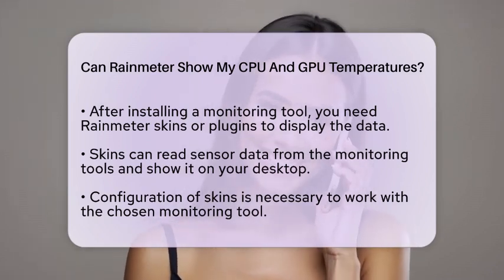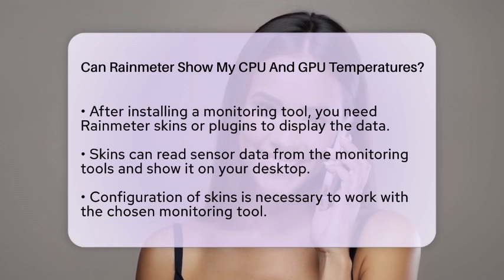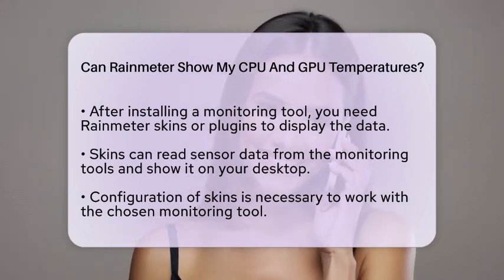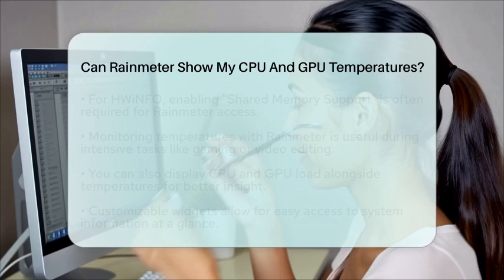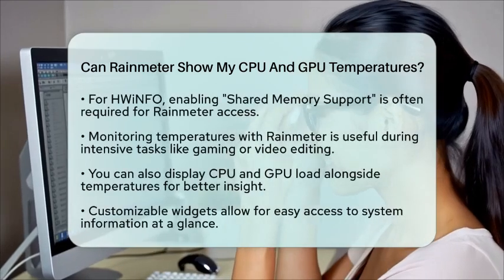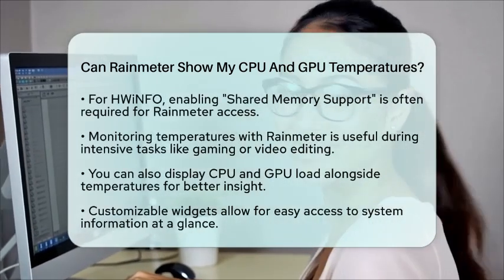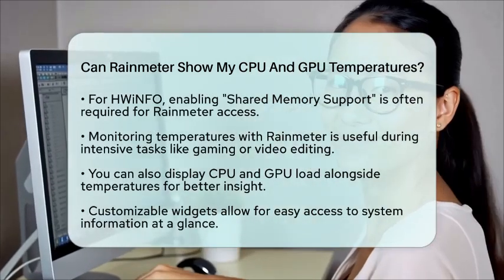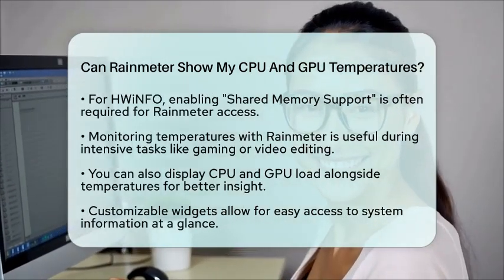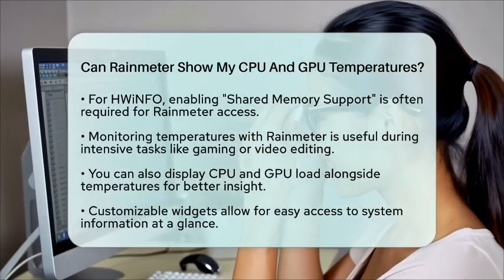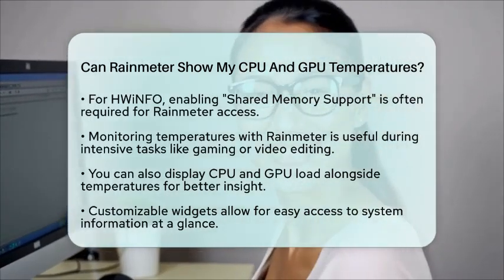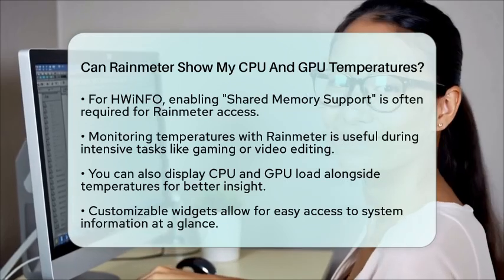Using RainMeter to monitor your CPU and GPU temperatures can be very practical. It allows you to keep an eye on system temperatures in real-time, which is especially helpful during demanding tasks like gaming or video editing. You can also display CPU and GPU load alongside temperatures to see how workload affects heat generation. Plus, customizing your desktop with visually appealing widgets can make your system information easily accessible at a glance.